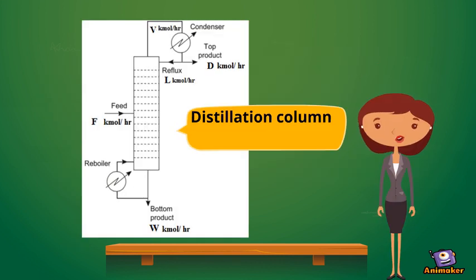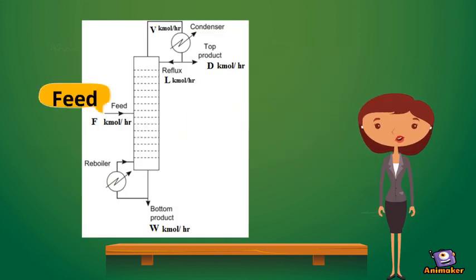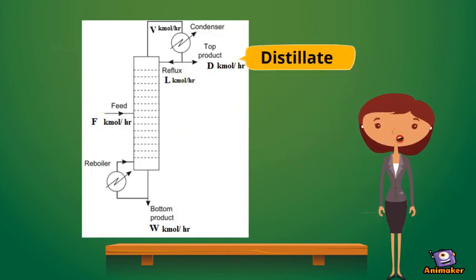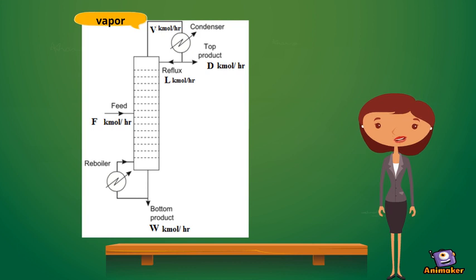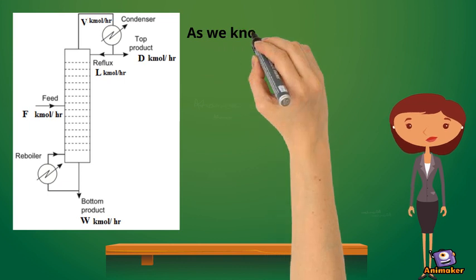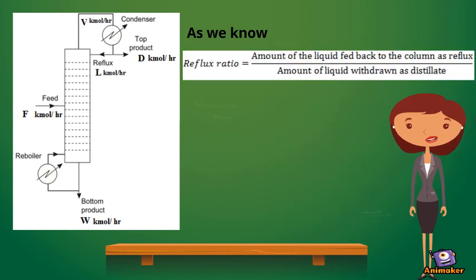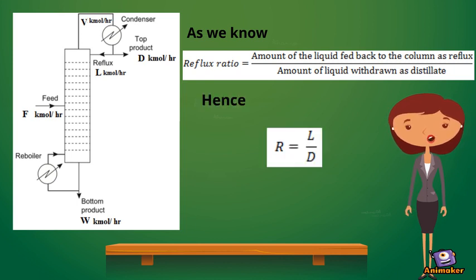This is the distillation column. Feed is introduced here. During the distillation process, distillate is collected from the top and the residue is collected from the bottom. From the top of the column, vapors are condensed in the condenser and fed back to the distillation column as reflux. The reflux ratio is the ratio of the amount of liquid fed back to the column as reflux to the amount of liquid withdrawn as distillate. Hence, R equals L by D.